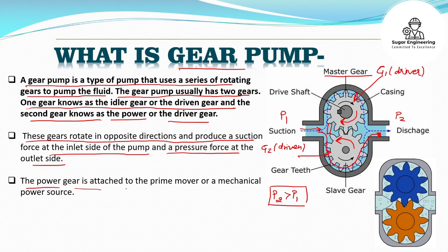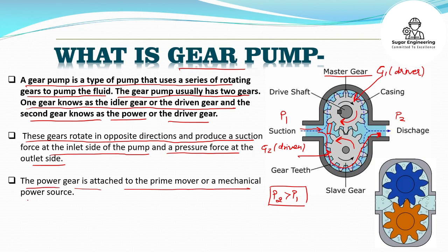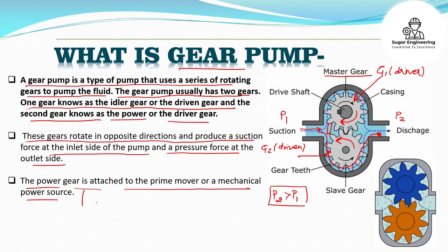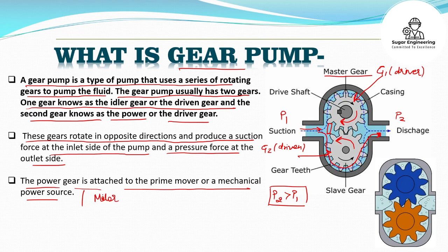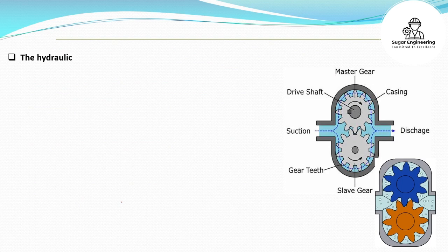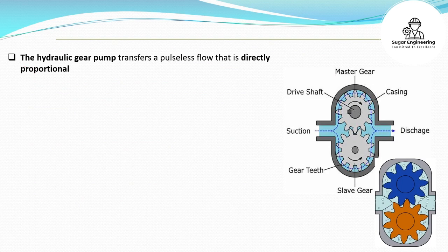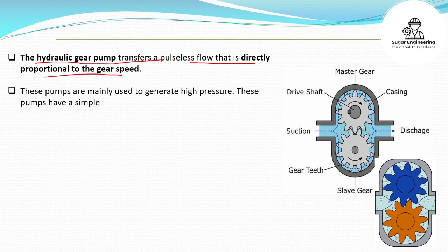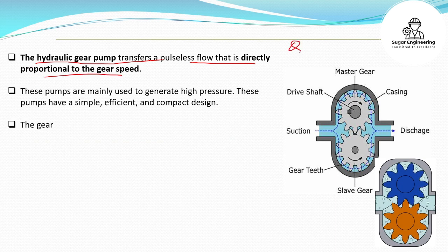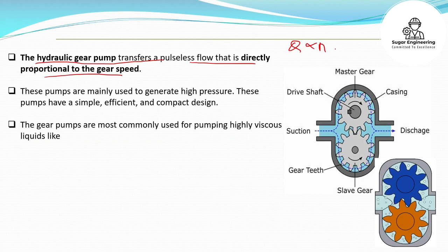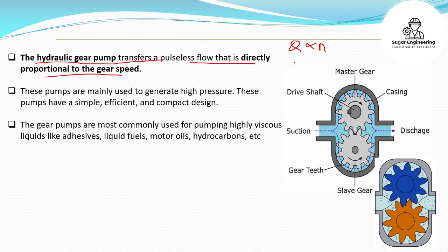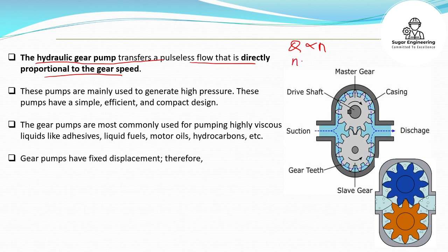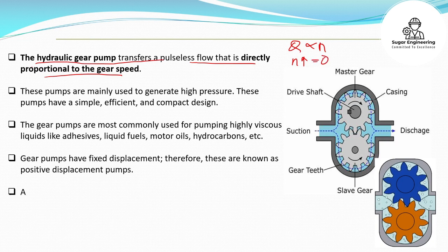The power gear is attached to the prime mover or mechanical power source — we can say it is connected to a motor. The hydraulic pump transfers a pulseless flow that is proportional to the gear speed, meaning the flow of the pump is directly proportional to the speed of the pump. If the speed of the gear increases, then the flow of the pump also increases.